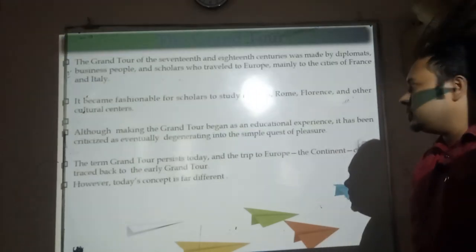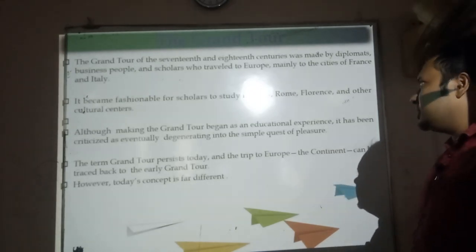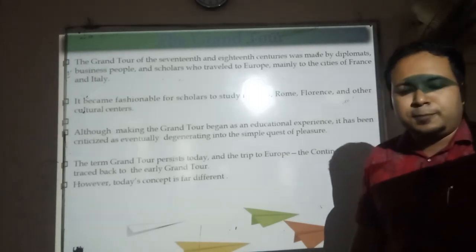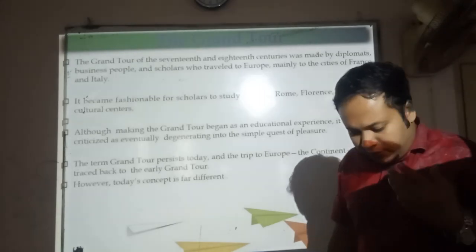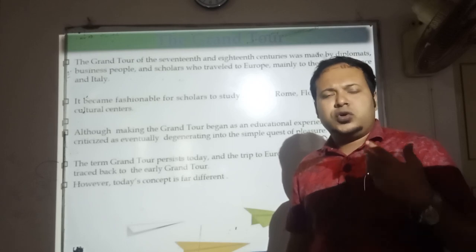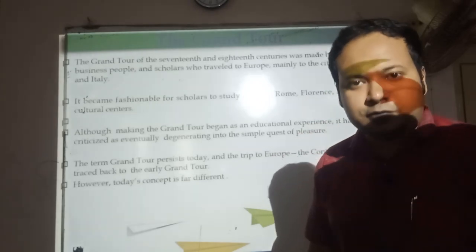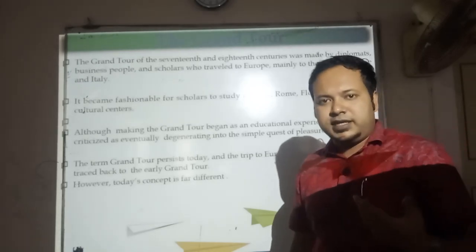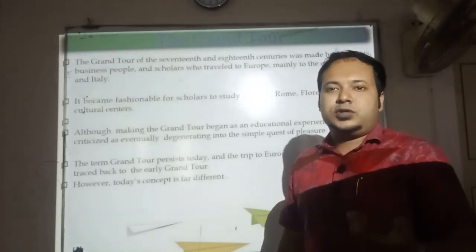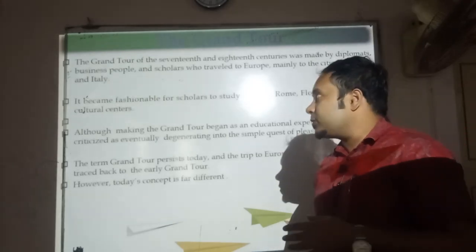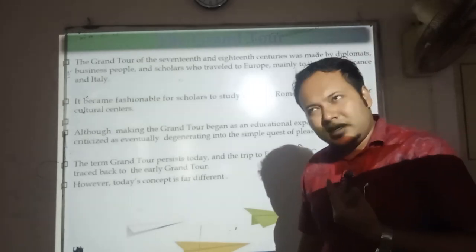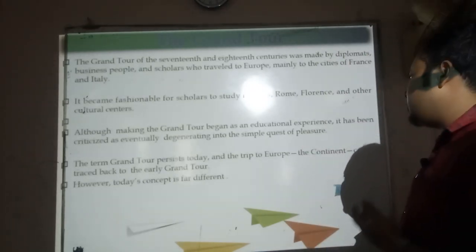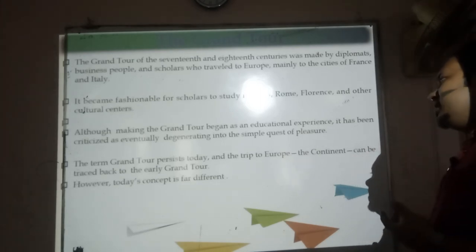The Grand Tour of the 17th and 18th centuries was made by diplomats, business people, and scholars who traveled to Europe, mainly to the cities of France and Italy. The Grand Tour refers to the concept of affluent persons from wealthy families who traveled to Europe for recreational and educational purposes, though people often said they traveled for entertainment. This purpose was a little bit contradictory. The term 'Grand Tour' persists today, and the trip to the European continent can be traced back to the early Grand Tour.